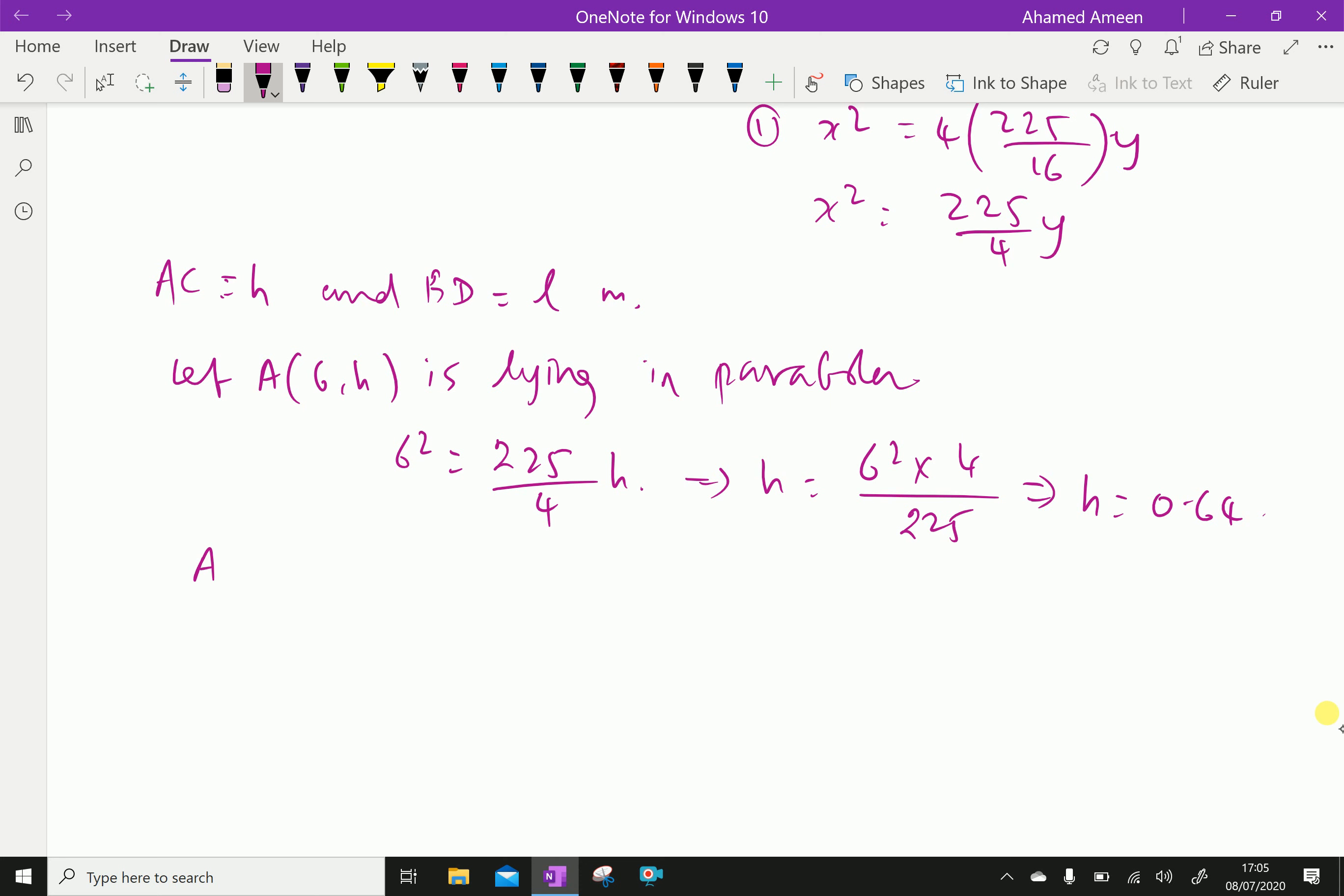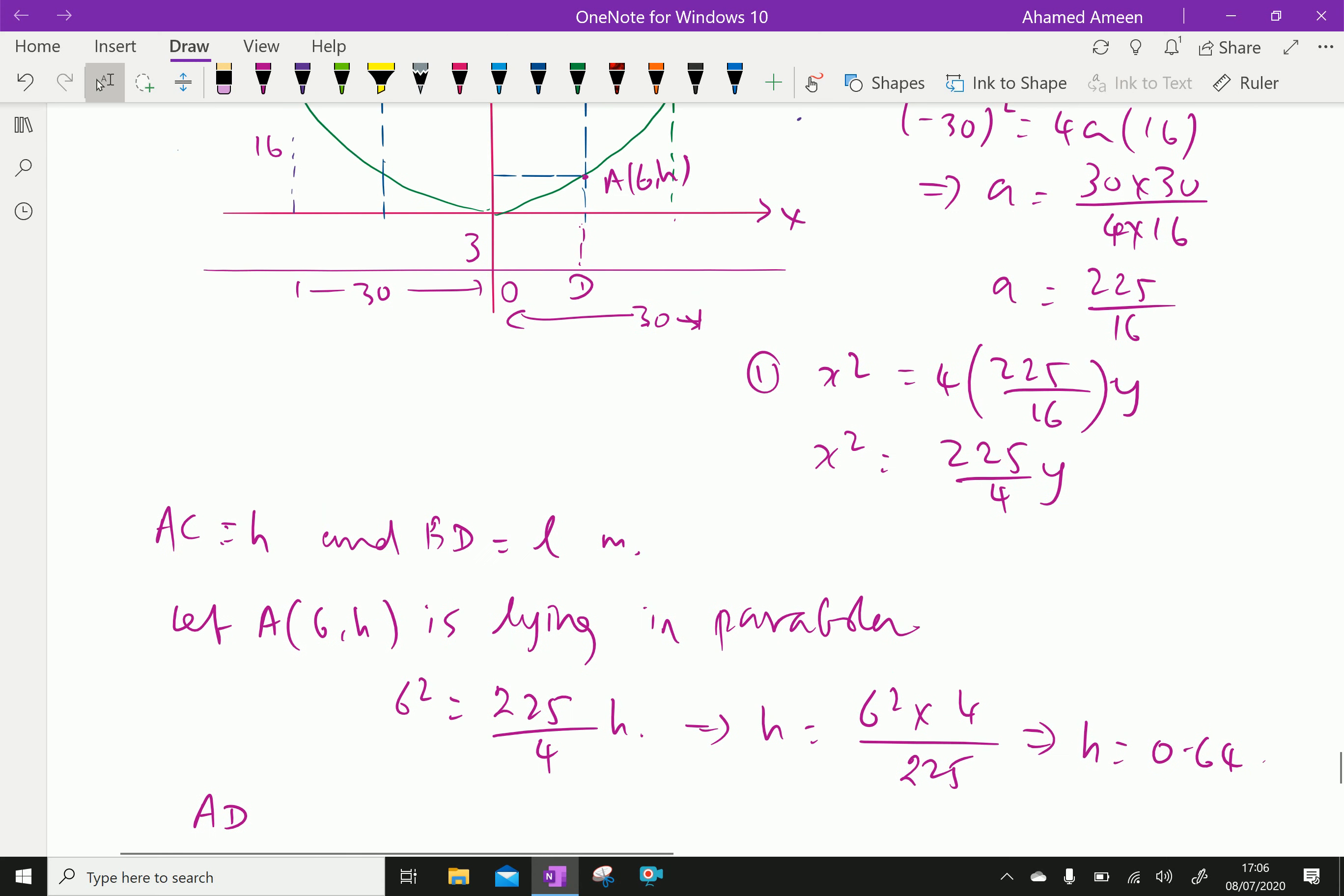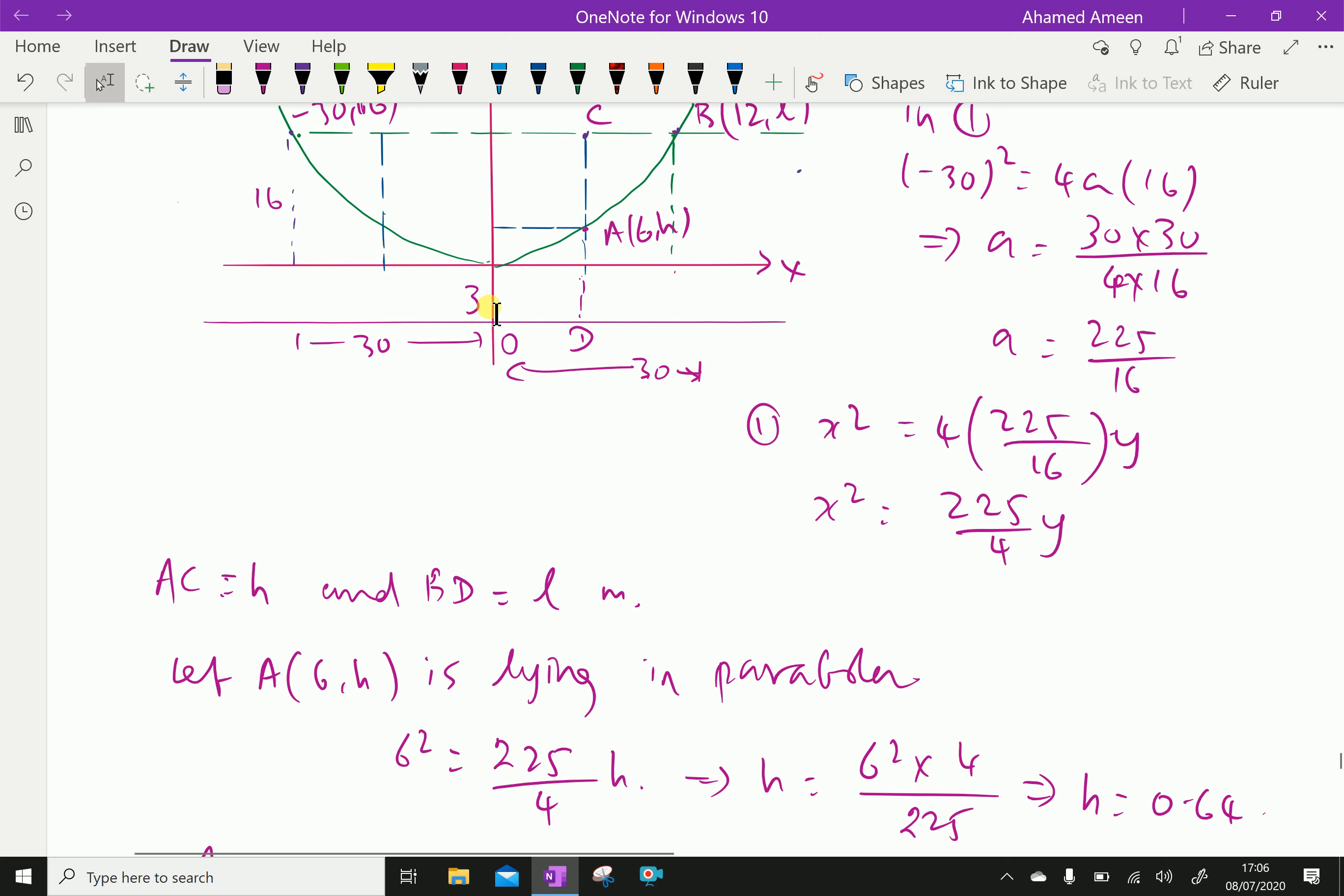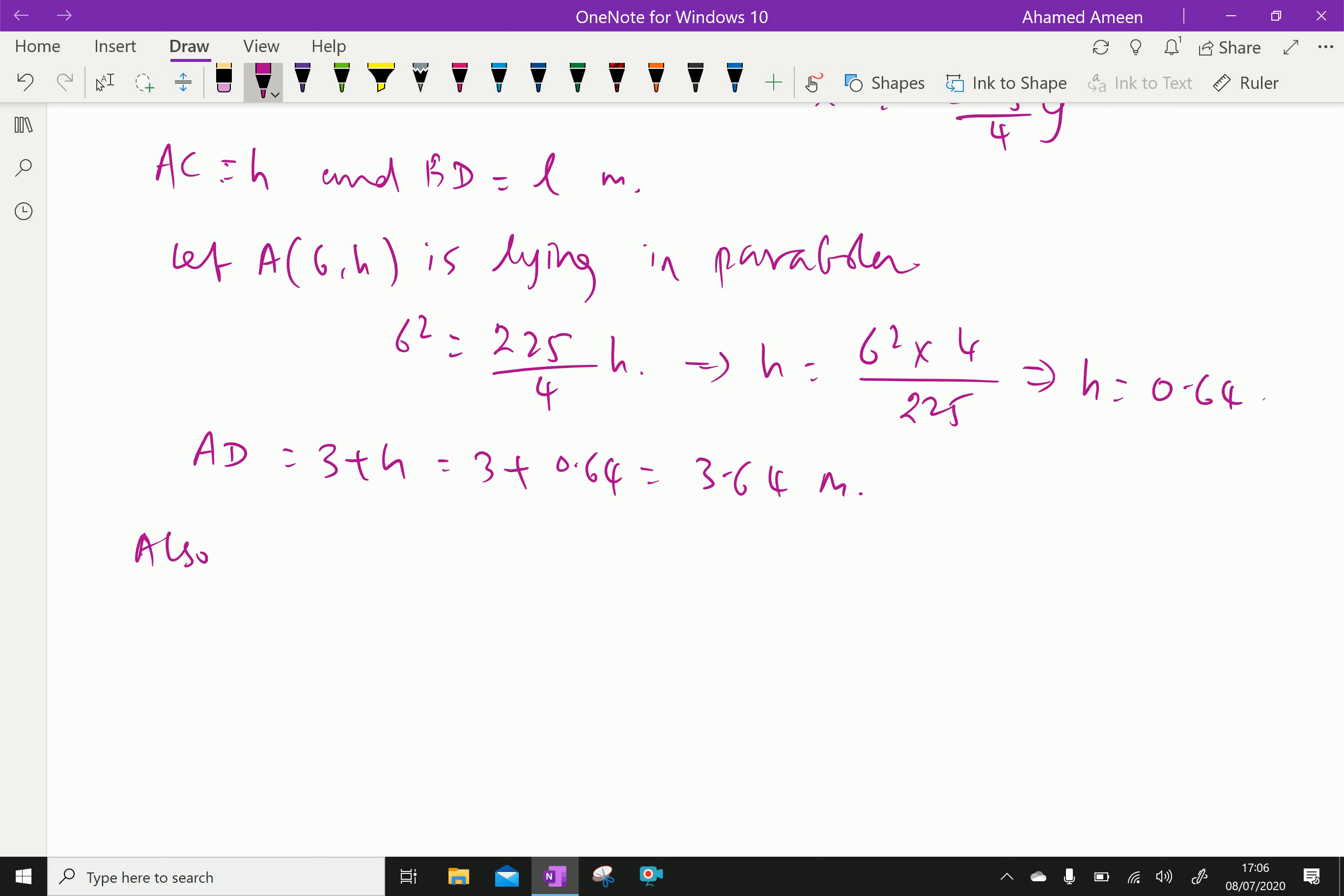Now therefore we can say AD, the point D is here. The point AD therefore is 3 plus h, because it is 3 meter here. AD is 3 plus h equal 3 plus 0.64 equal 3.64 meter.